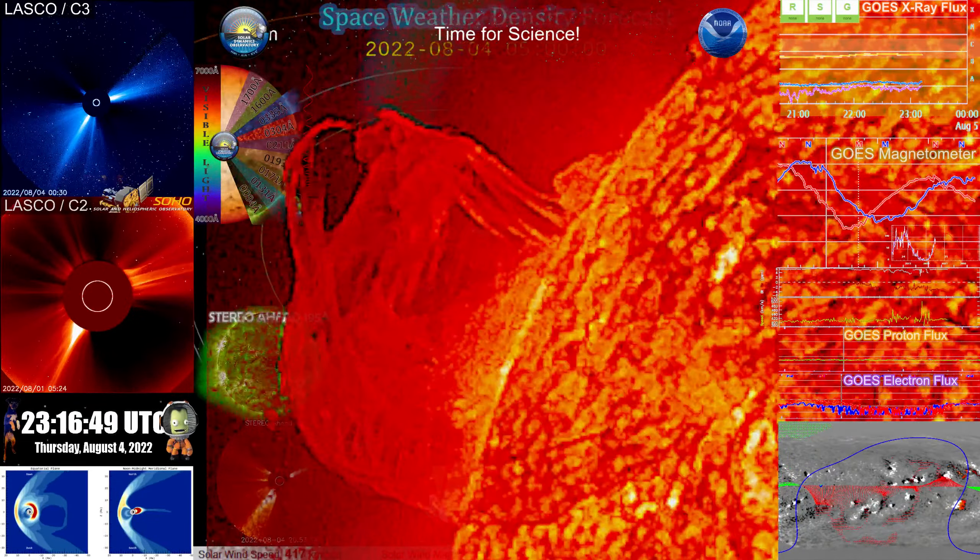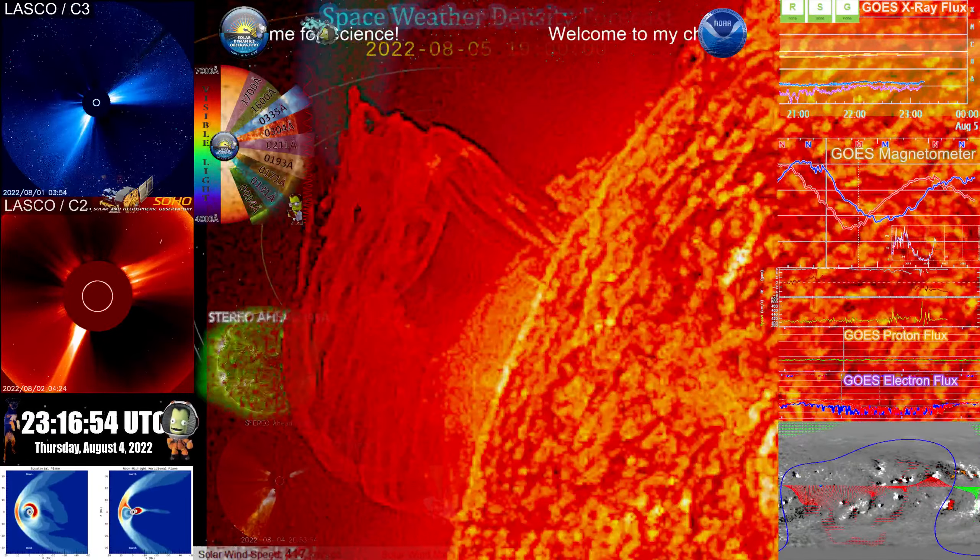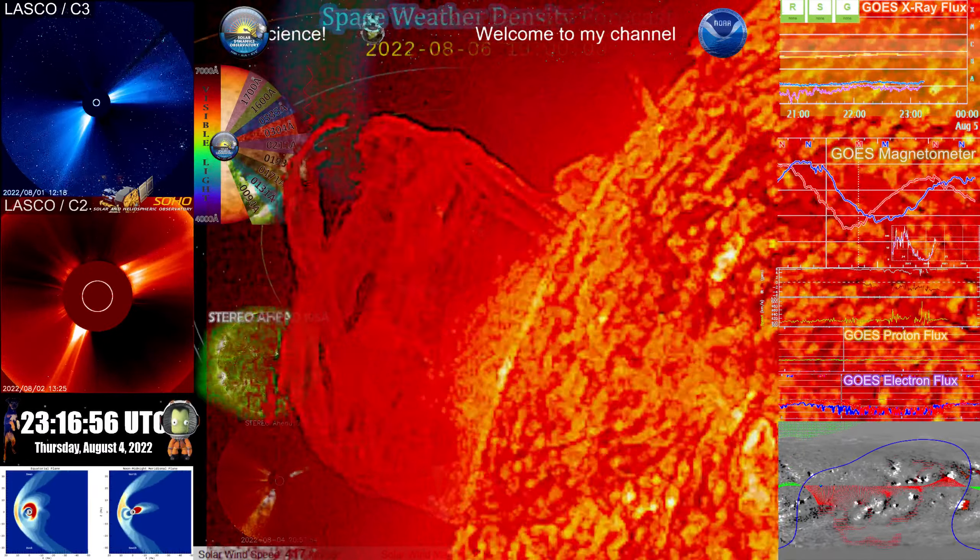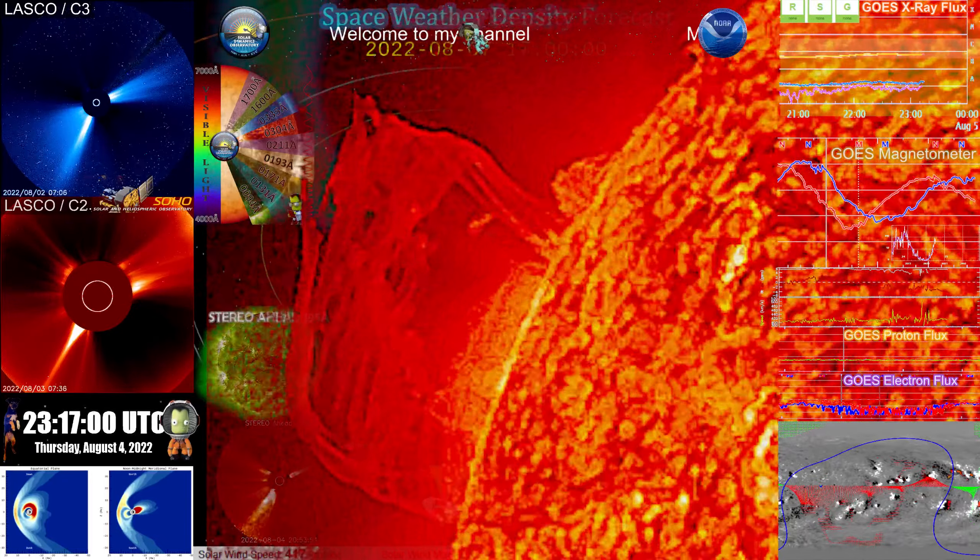We see them go hundreds of thousands of miles in space before they're cool enough that it's no longer showing on the imagery. And then we have to wait for LASCO to show us the difference view of where we see the radiance of the CME itself.